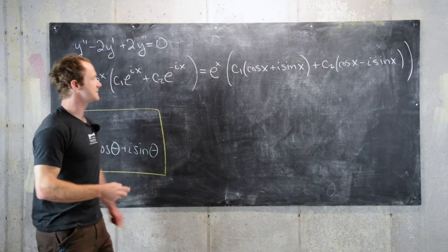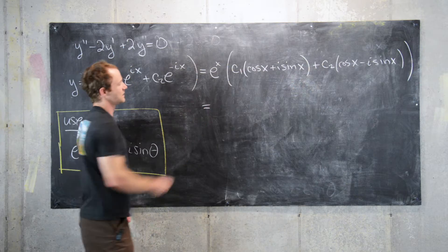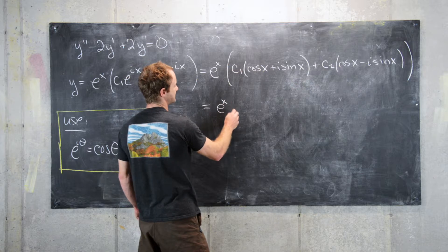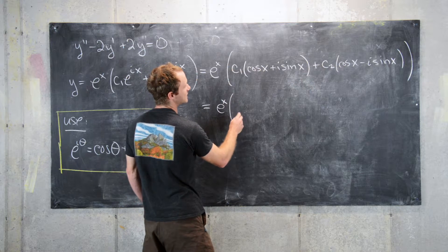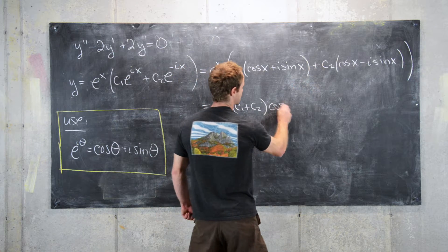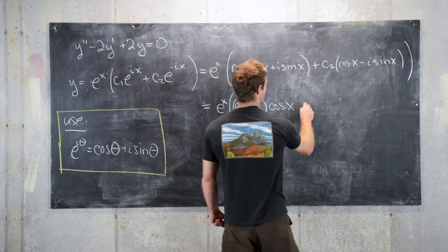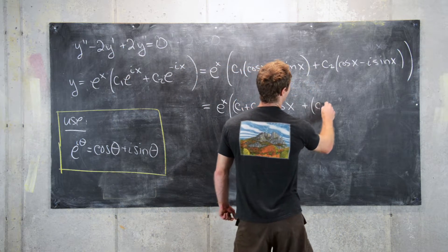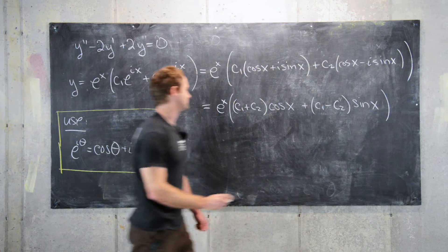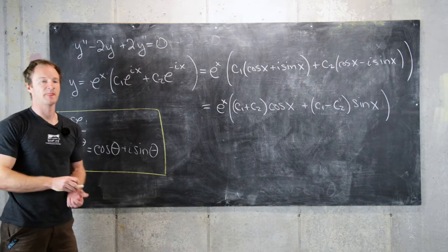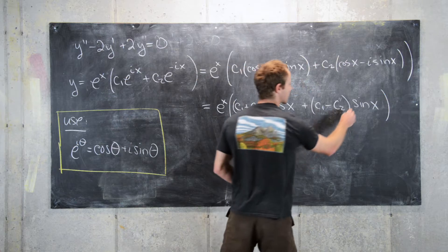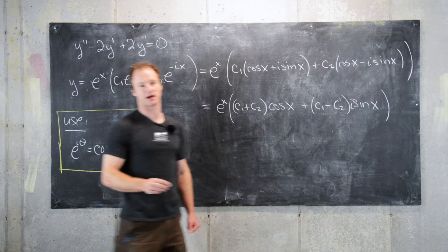Good. And now we can put all of this together. So this will give us e to the x and then we'll have c1 plus c2 times cosine of x plus c1 minus c2 times sine x. Good. And now what we can do is, sorry, I'm missing an i here, times i sine x.